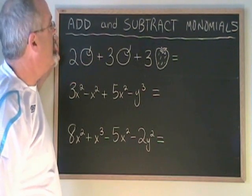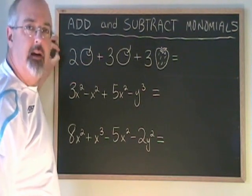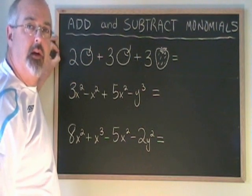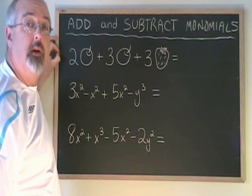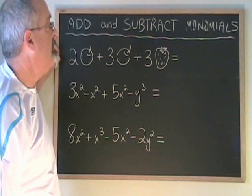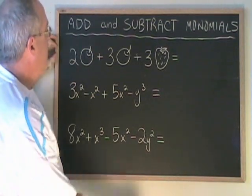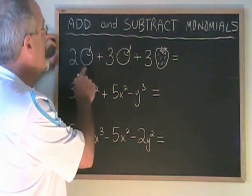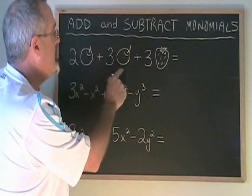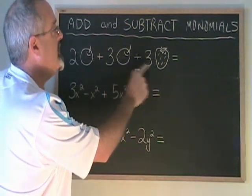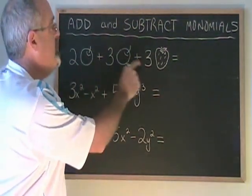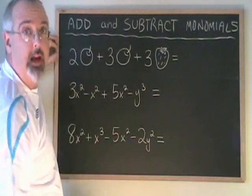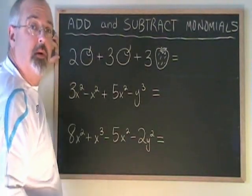In this video we are going to learn how to add and subtract monomials. The rule for adding and subtracting monomials is that you have to keep similar terms together. Here's an example: we have two apples plus three apples plus three strawberries.